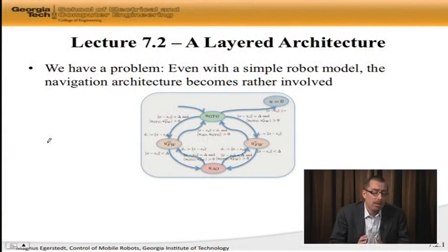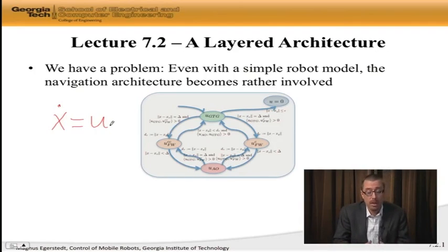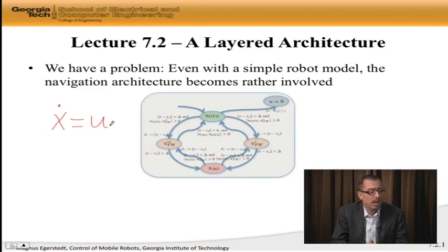We saw that the one remaining challenge is how do we actually make our real robot, or model of the real robot, which was the unicycle model, behave or act like the simpler model, x dot is equal to u, that we used when we designed our navigation architecture. We really have a problem, because we used the simplest possible model, x dot equal to u, as the basis for our control design, and then we started switching between go to goal, follow wall, follow wall counter clockwise, avoid obstacles, and so forth. The navigation architecture we ended up with is this rather messy looking hybrid system.